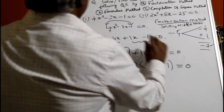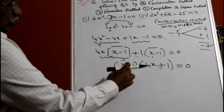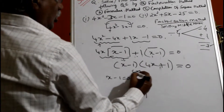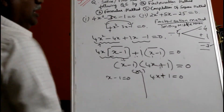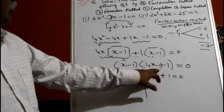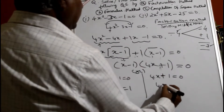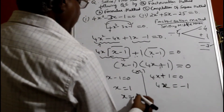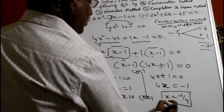If equal to 0 is not there, it is called factorization of the expression. But equal to 0 is needed to solve it. When two numbers multiplied equal 0, you get x minus 1 should be 0, or 4x plus 1 equal to 0. Because 0 into something is 0. So you get x equal to 1. Here you get 4x equal to minus 1, so x is equal to minus 1 by 4.